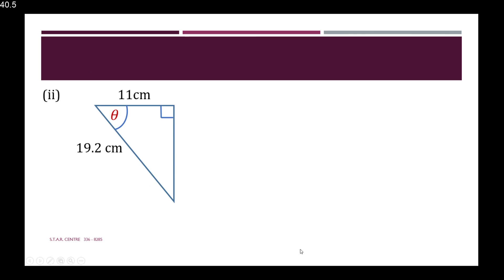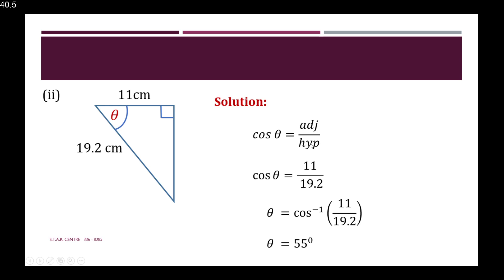In the next example, we need to find the value of theta, given two sides of the triangle. The 19.2 cm is the hypotenuse since it's opposite the right angle. Because theta is at the top, the 11 cm is touching that angle, making it the adjacent side. We need a formula with adjacent and hypotenuse — cos theta equals adjacent over hypotenuse. So theta equals cos inverse of 11 over 19.2, which gives 55 degrees.